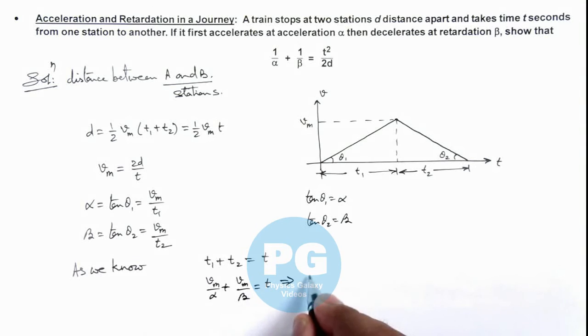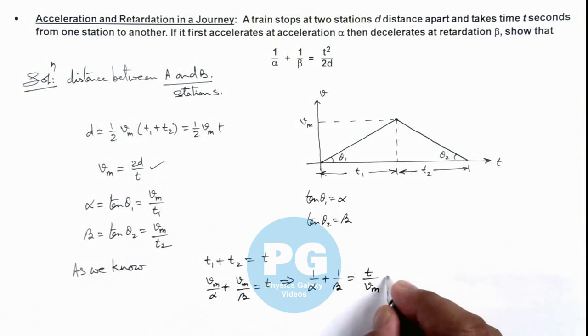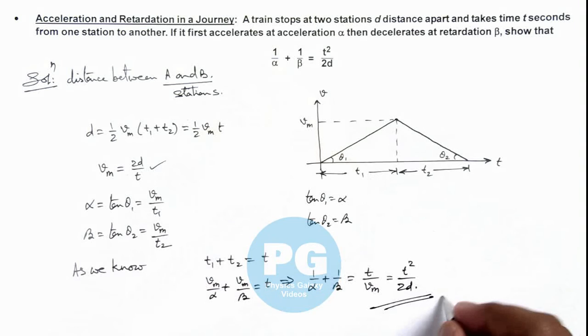So we can write this expression as 1/α plus 1/β equals t/vₘ. If we substitute the value of vₘ from earlier, the result we get is t²/2d. This is what we are required to prove here.